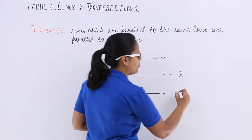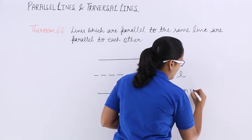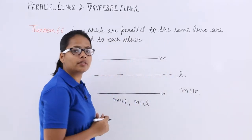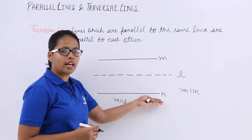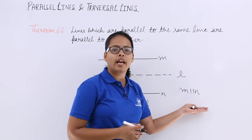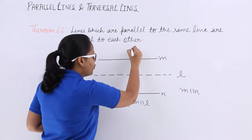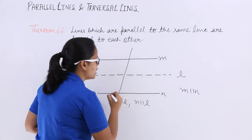How? M is parallel to n. If l is parallel with n then m will be parallel with n. To prove this, draw a transversal line here.